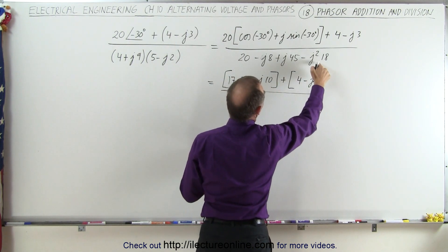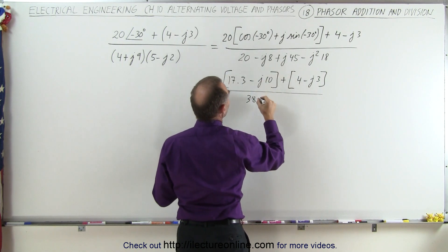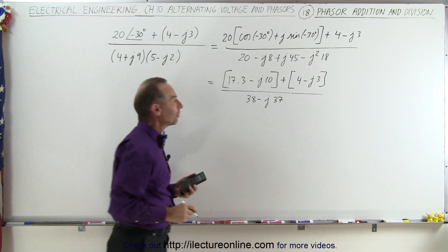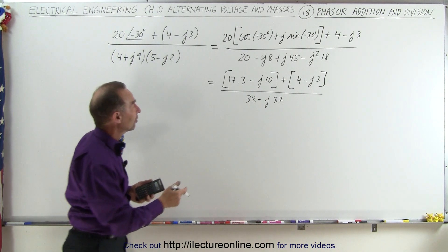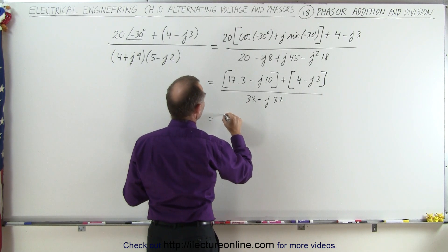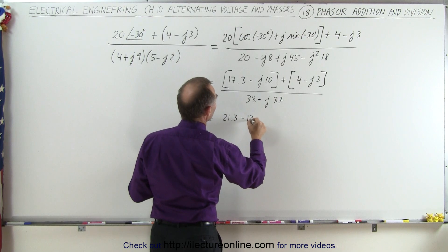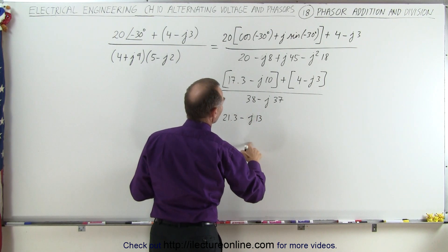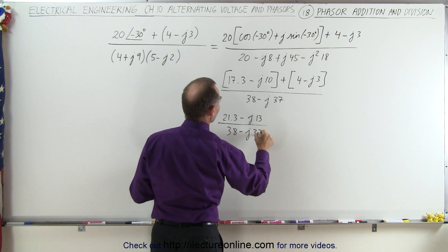In the denominator, we add positive 18 to 20, which gives us 38 minus j times 37. Now we add the numerator together — we simply add the real and imaginary parts together. So this becomes 21.3 for the real part, and minus j13 for the imaginary part, divided by 38 minus j37.